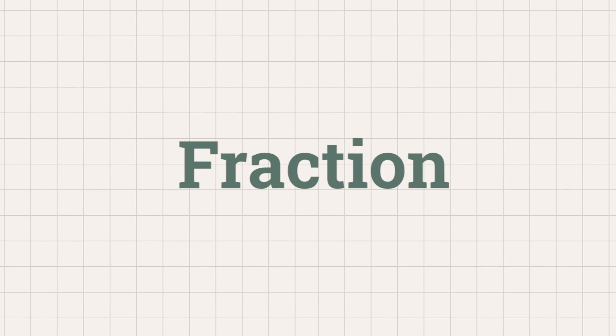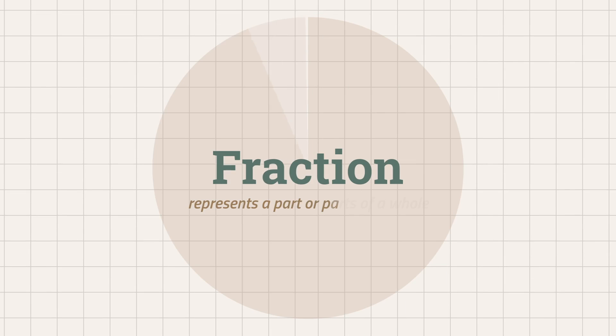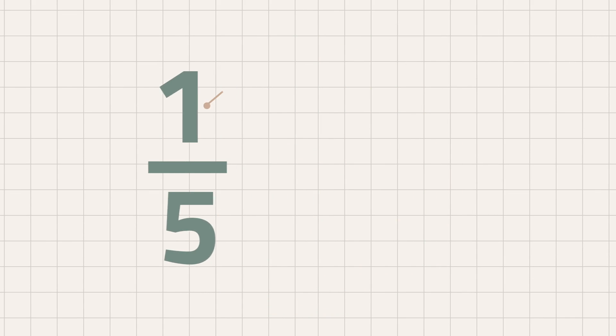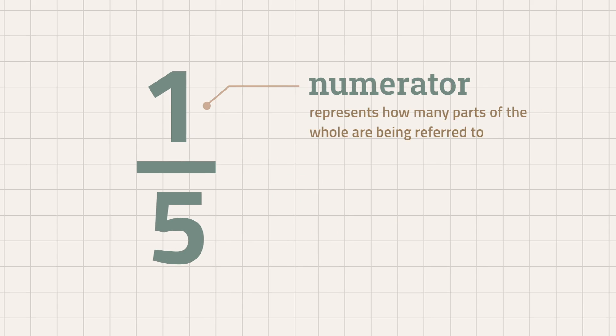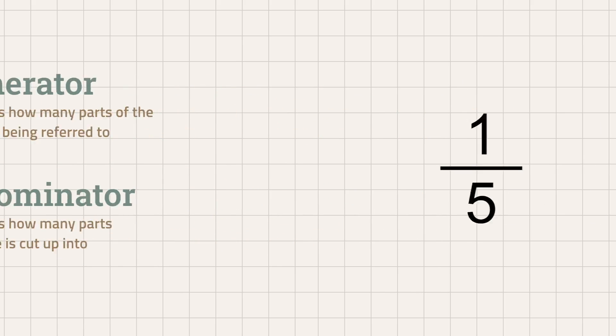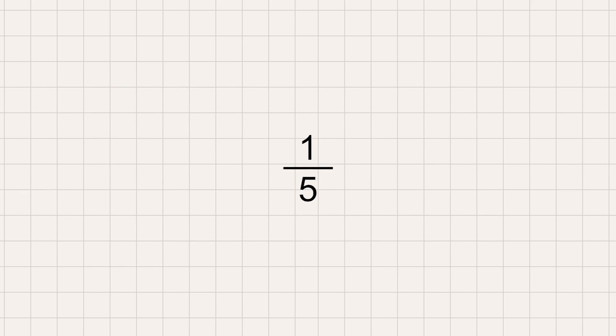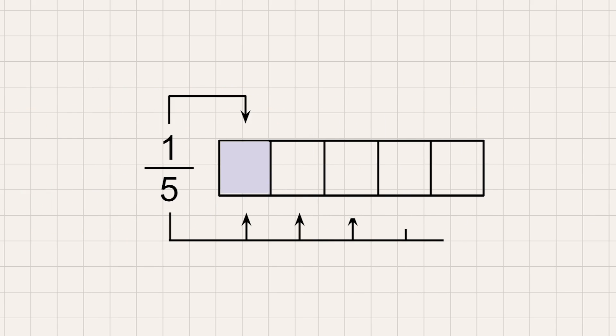First, let us recall, what does a fraction mean? A fraction represents a part or parts of a whole. The numerator or the number on top of a fraction represents how many parts of the whole are being referred to, while the denominator or the bottom number represents how many parts one whole is cut up into. If we are to create an illustration of the fraction one-fifth, it will look like this.